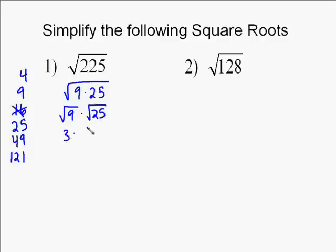And so we separate those out. Now we can find the square root of 9, which is 3, and the square root of 25, which is 5. And it turns out that 225 itself was a perfect square, and that was 15 squared.